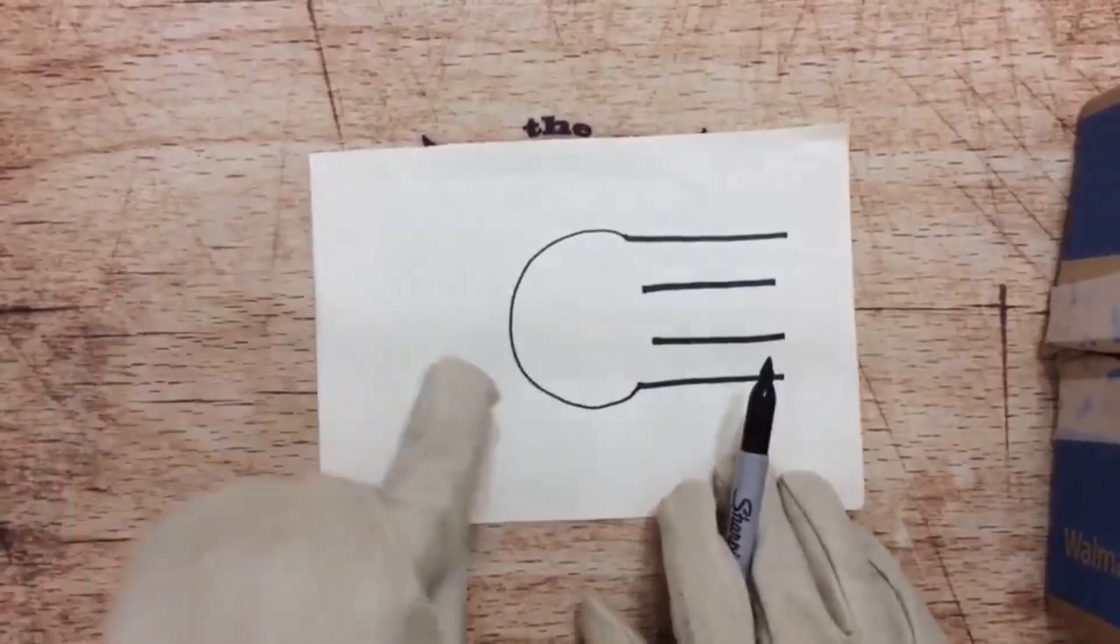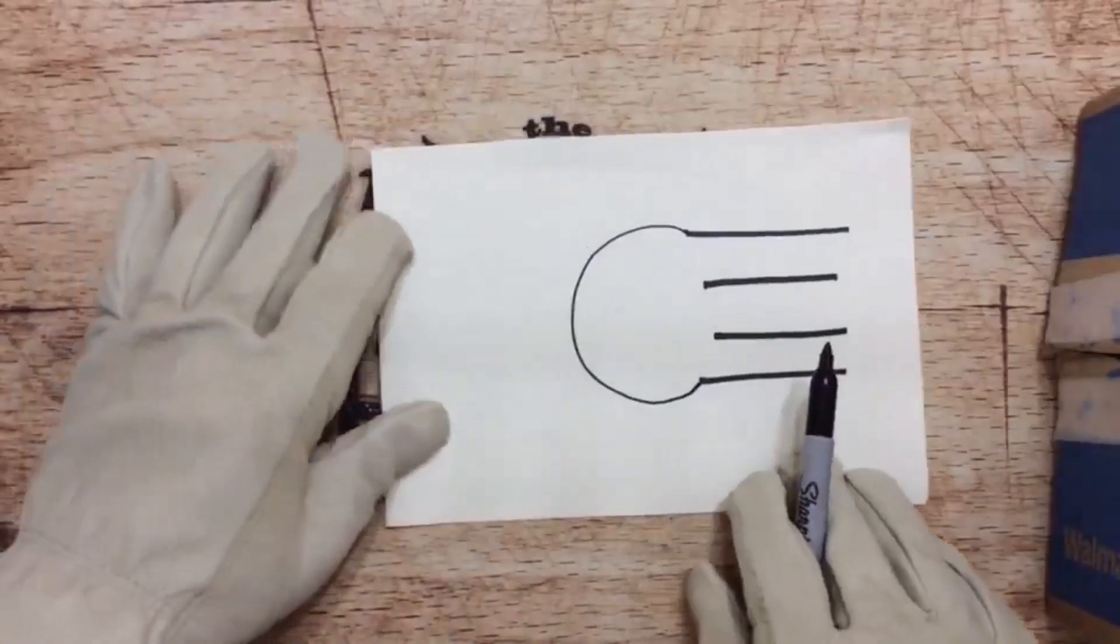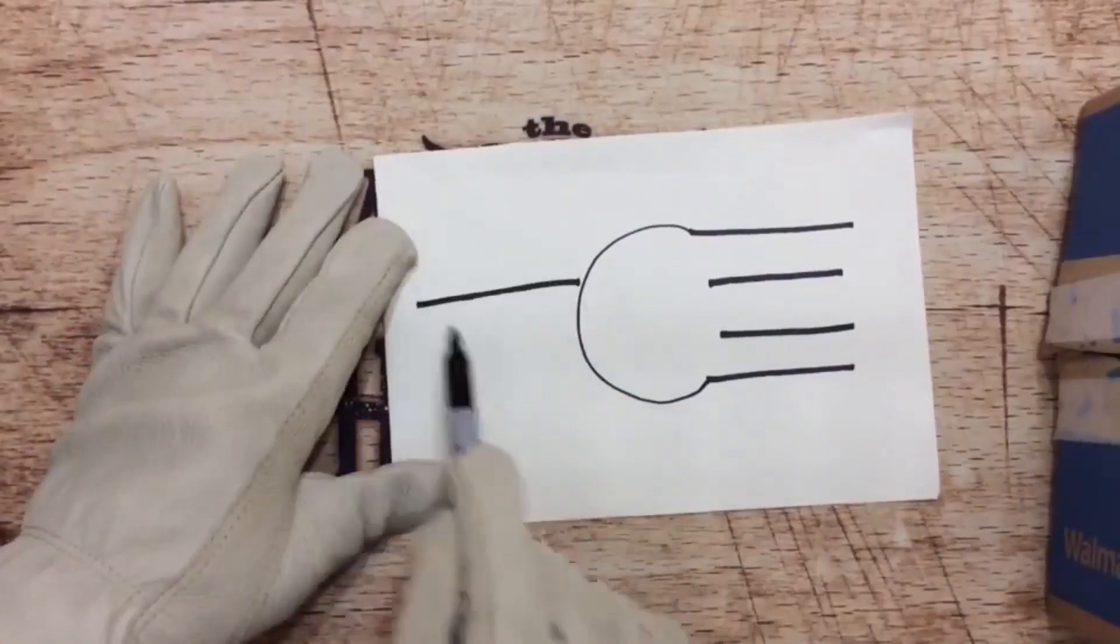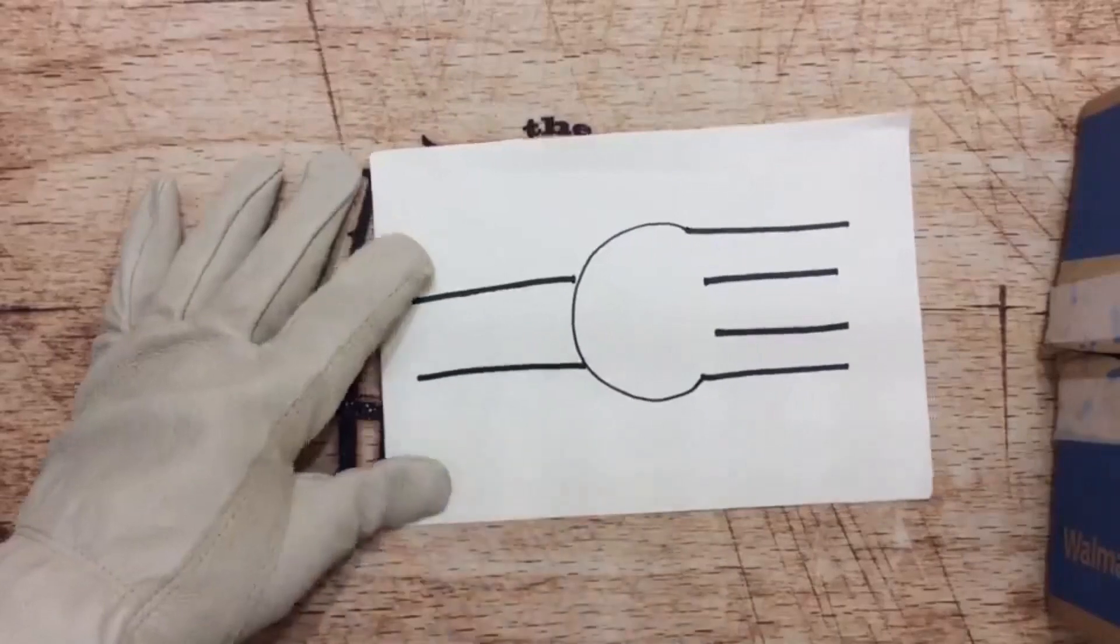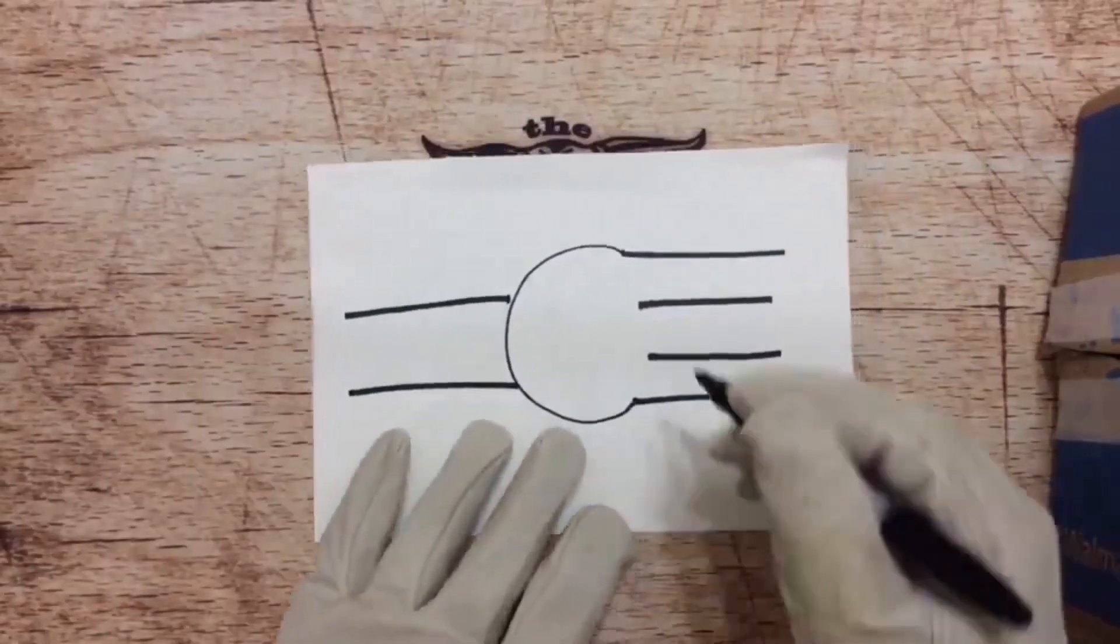Now, the other thing we want to do is over here on this side of the capital C, we're going to do another big old equal sign. This is going to be that little bunny body.